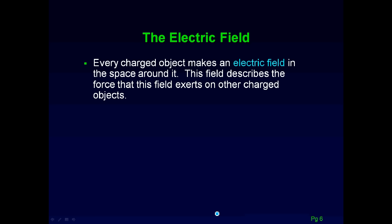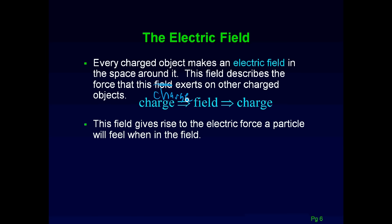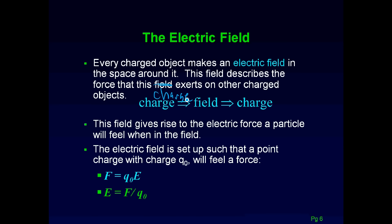Every charged object will make an electric field in the space around it. This field describes the force that this charge exerts on other charged objects. Basically, the charge causes a field, which then applies the force on another charge. This field gives rise to the electric force a particle will feel when it's in that field. The electric field is set up such that a point charge Q₀ in a region with an electric field will feel a force given by this equation — so the electric field is force per charge.